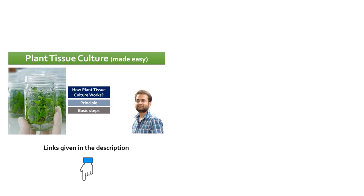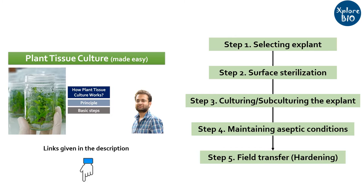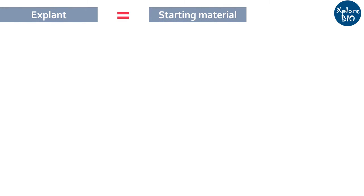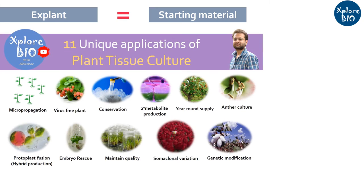If you have watched my introductory video on plant tissue culture, you must be aware that obtaining an appropriate explant is the first step to begin tissue culture. Based upon the intended application, it is very important to select the right explant. In brief, an explant is the starting or source material — the cells obtained from the plant and used for various tissue culture applications.